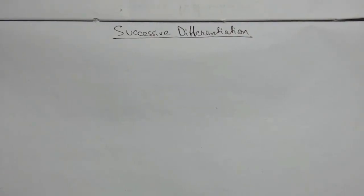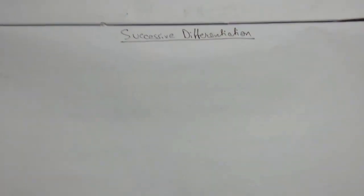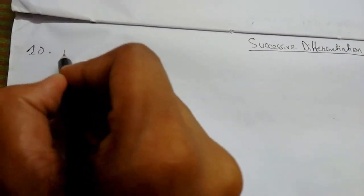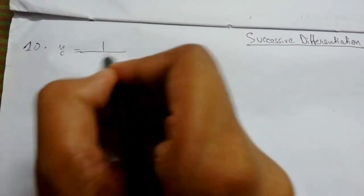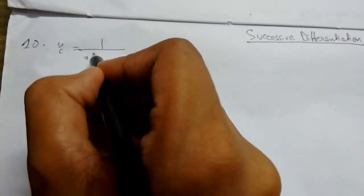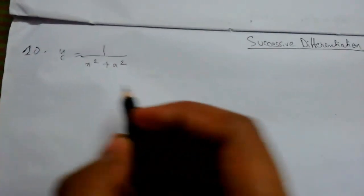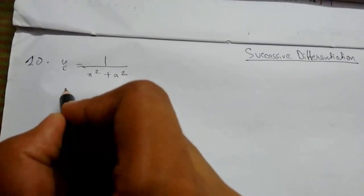Hi guys, in this video lecture we will be continuing successive differentiation. This is number 10, which is our standard derivative: y equals 1 upon x squared plus a squared. Let's get started.